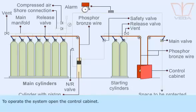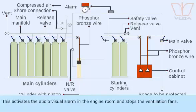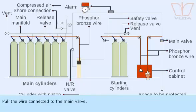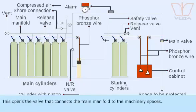To operate the system, open the control cabinet. This activates the audio-visual alarm in the engine room and stops the ventilation fans. Pull the wire connected to the main valve. This opens the valve that connects the main manifold to the machinery spaces.